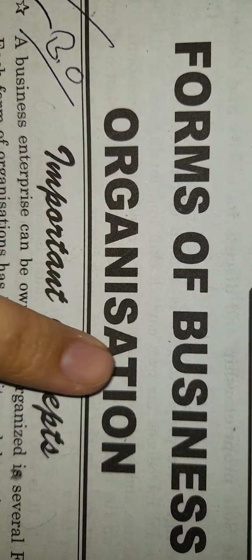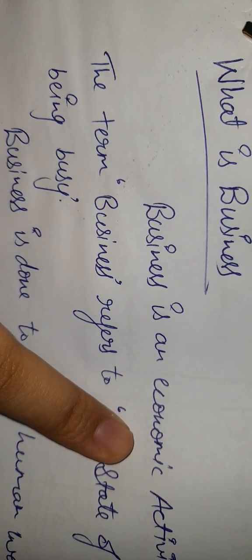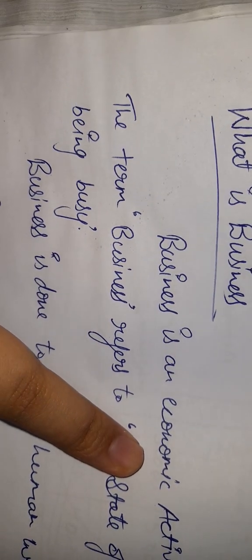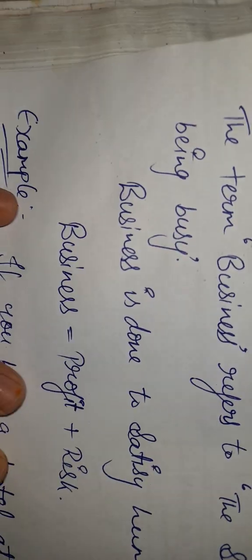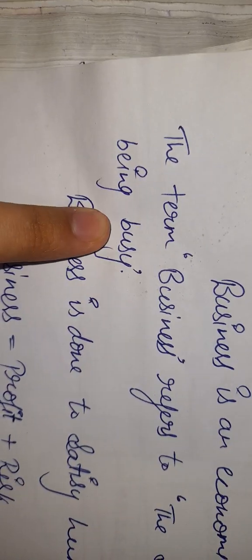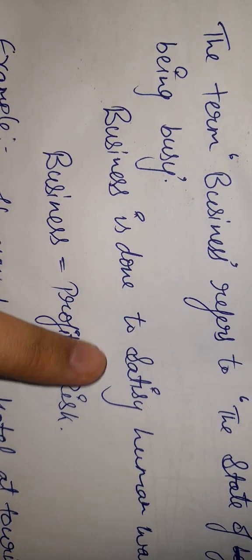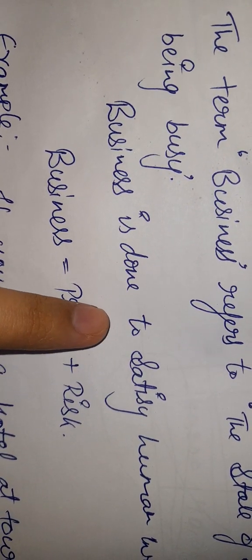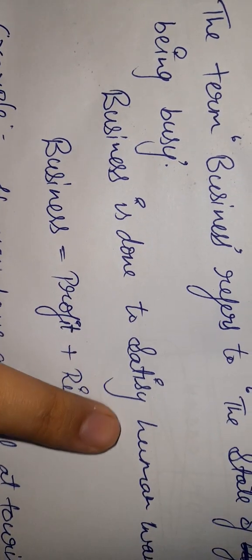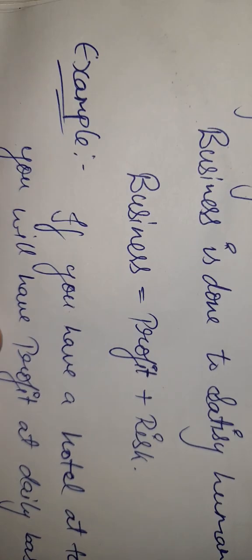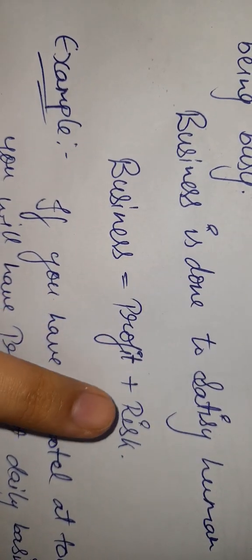Before knowing forms of business organizations, let's understand what is business. Business is an economic activity — the transfer of goods, services, and commercial activity. The term business refers to a state of being busy. Business is done to satisfy human wants, and business equals profit plus risk.